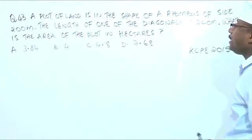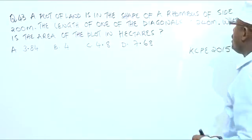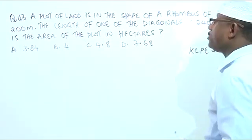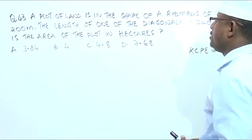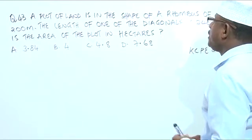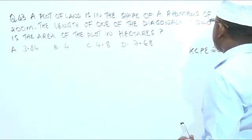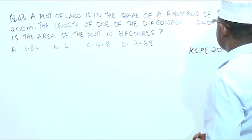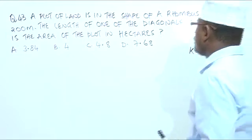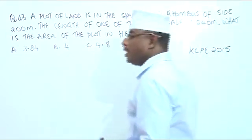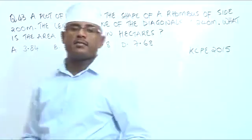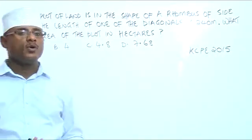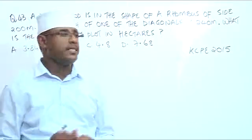A plot of land is in the shape of a rhombus with a side of 200 meters. The length of one of the diagonals is 240 meters. What is the area of the plot in hectares?